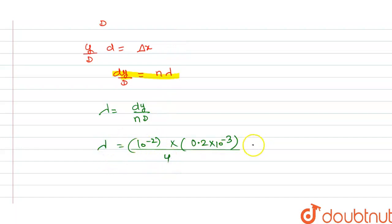From this we get λ equals approximately 5 × 10⁻⁷ meter, which is approximately equal to 5000 angstrom.